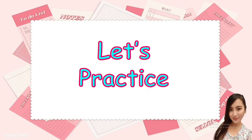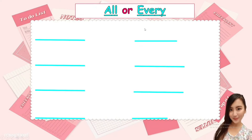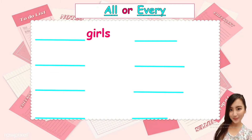Now let's practice: all or every. Blank girls. Is it singular or plural? Girls. It's plural because there is an S. So what is the answer — all or every? The answer is all. All girls. We use all for plural, and girls is plural, so we use all.